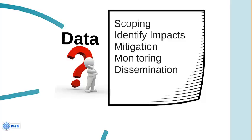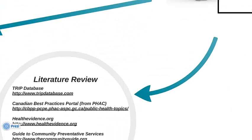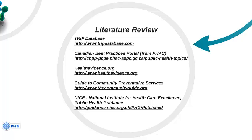One of the first places we might look for information is the literature. Here we will talk about two databases that may be helpful when you carry out your literature search. The TRIP database is a federated search engine that searches multiple sources. The Canadian Best Practices Portal includes Canadian data, strategies and links to some systematic reviews. Health Evidence is a registry of systematic reviews on the effectiveness of public health and health promotion interventions. The Guide to Community Preventive Services is an evidence-based resource of recommendations from systematic reviews of public health interventions. Lastly, the NICE database contains documents for public health that include recommendations and full supporting reviews.